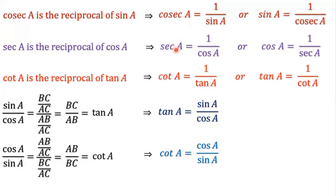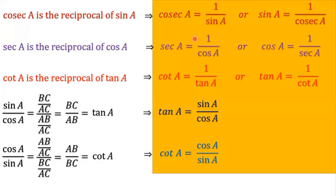These are very important formulas of trigonometry: cosec A equals 1 by sin A, sec A equals 1 by cos A, cot A equals 1 by tan A, tan A equals sin A by cos A, and cot A equals cos A by sin A. These are very important formulas you have to remember.